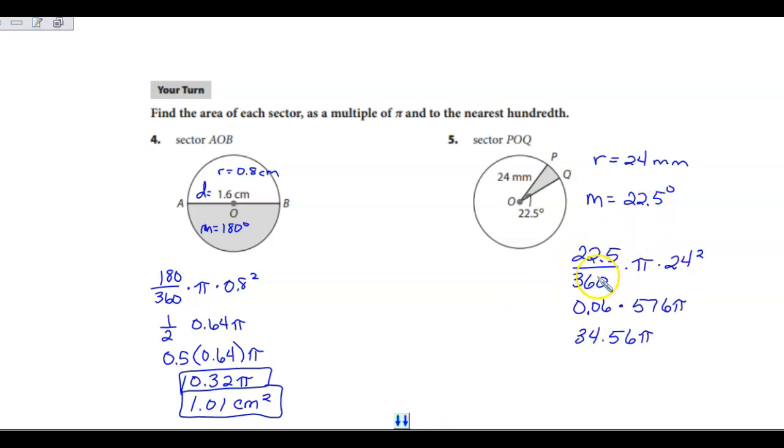When I looked at the ratio of the degree of measure over 360, I chose to go decimal form. Otherwise, it would have been 4.5 over 72. Either way, it gives you 0.06. 24 squared is 576 times pi.